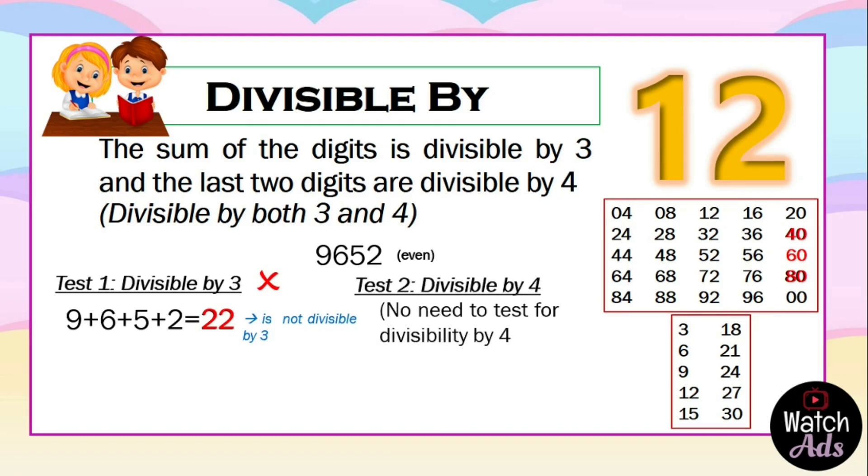Which means it's a no for our first test. Now we do not need to proceed with our second test, because if the number failed on the first test, it's no longer necessary. This means the number 9652 is not divisible by 12.